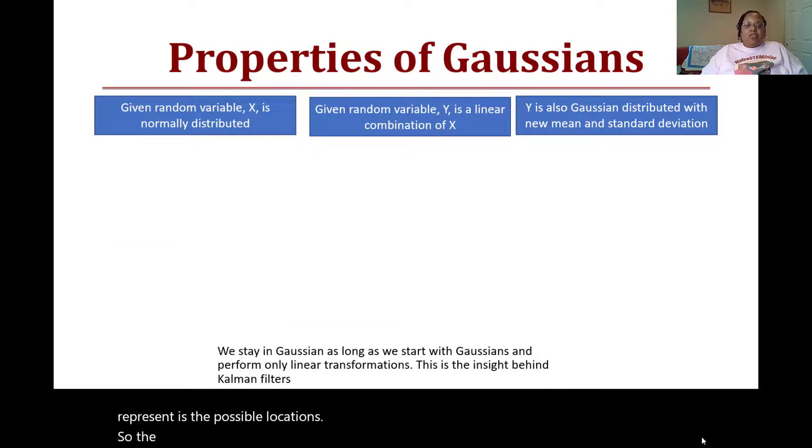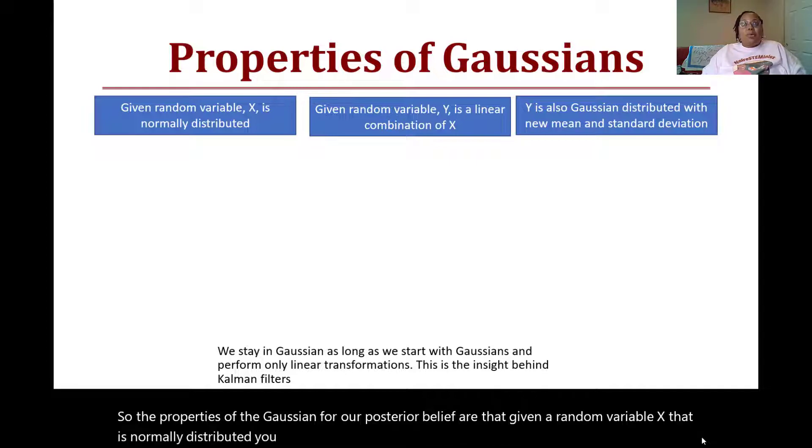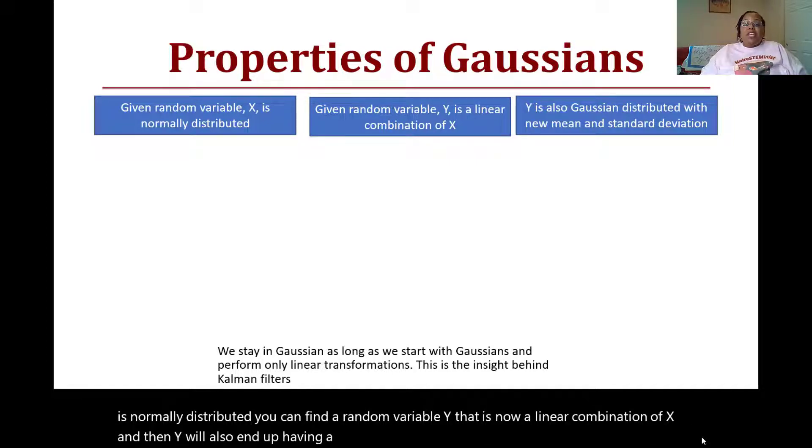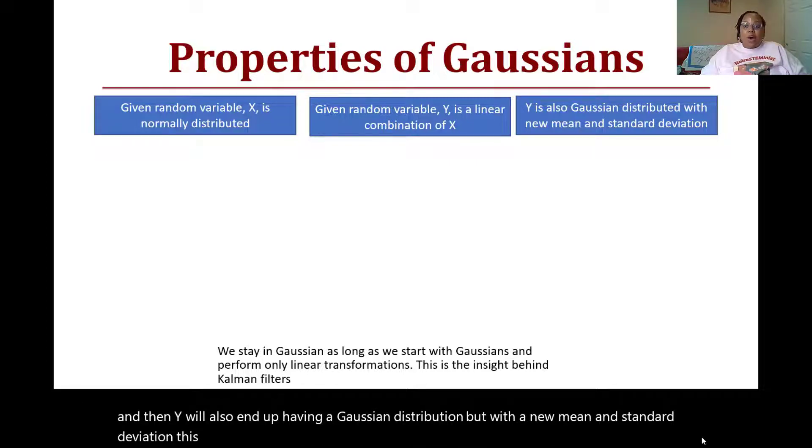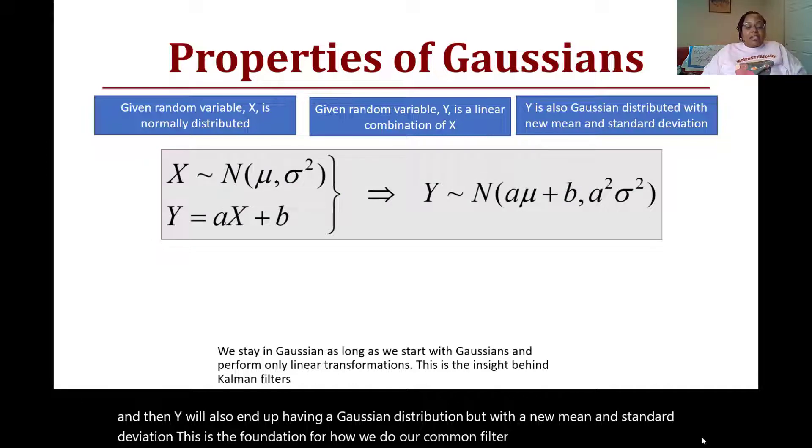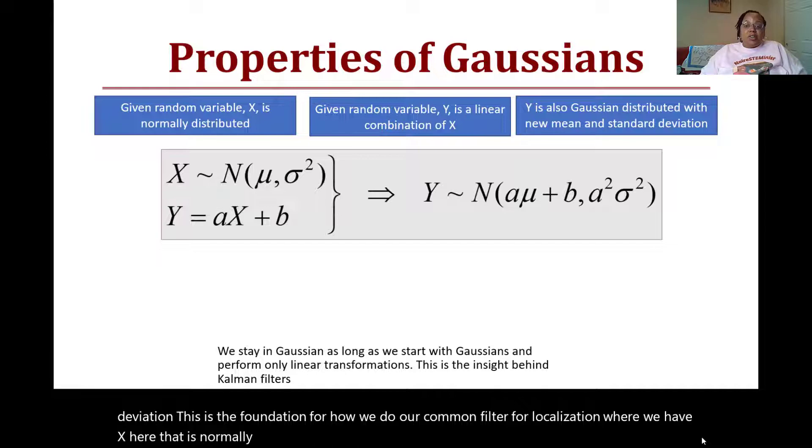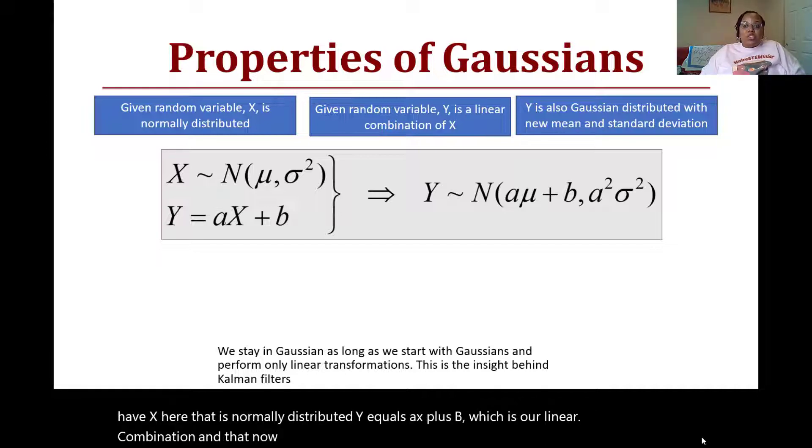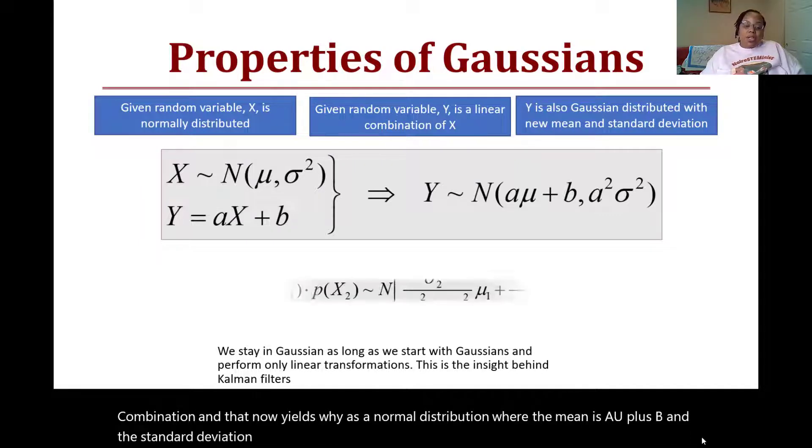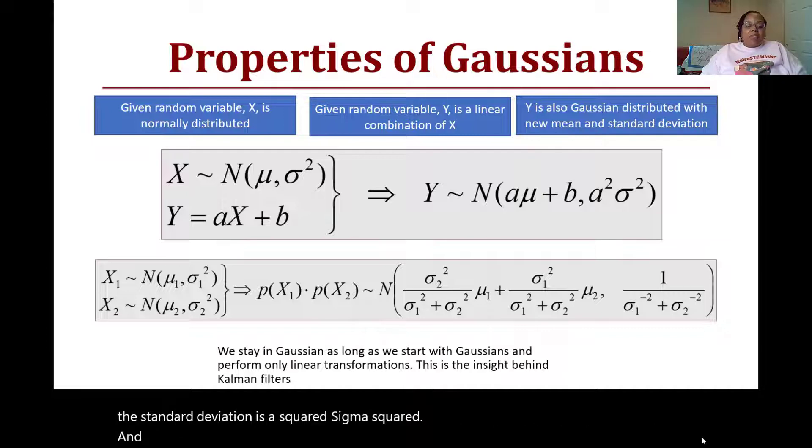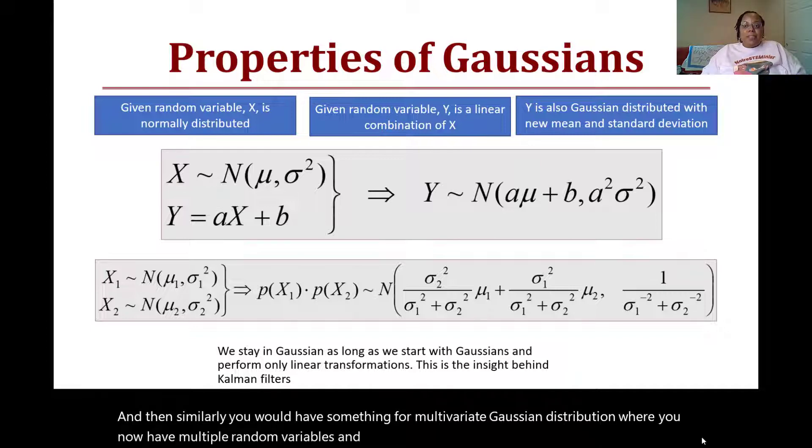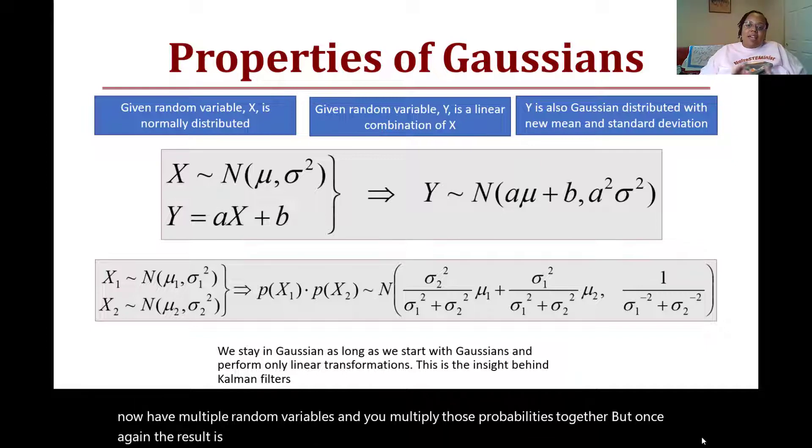The properties of the Gaussian for our posterior belief are that given a random variable x that is normally distributed, you can find a random variable y that is a linear combination of x, and then y will also end up having a Gaussian distribution but with a new mean and standard deviation. This is the foundation for how we do our Kalman filter for localization. Where we have x that is normally distributed, y = ax + b, which is our linear combination, and that now yields y as a normal distribution where the mean is aμ + b and the standard deviation is a²σ². Similarly, you would have something similar for multivariate Gaussian distribution where you now have multiple random variables and you multiply those probabilities together, but once again the result is still going to be a Gaussian or normal distribution.